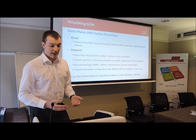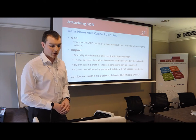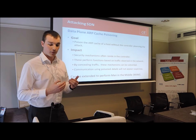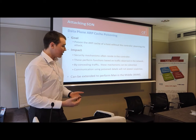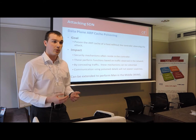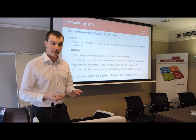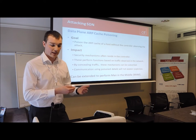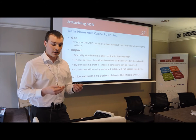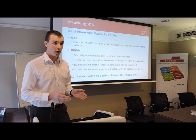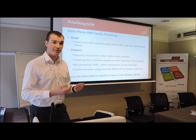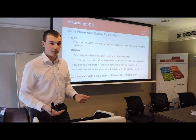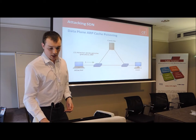The first attack is the data plane ARP cache poisoning attack. The goal is to allow the attacker to perform ARP cache poisoning against another host in the network without the controller observing the attack. This is interesting because most security mechanisms in SDN are implemented in the controller, since the controller is expected to observe every bit of traffic. If an attacker can perform an ARP cache poisoning attack without the controller observing it, they can avoid any security mechanisms built into the controller to prevent ARP spoofing. With many ARP cache poisoning attacks, this can easily be extended to perform a man-in-the-middle attack.